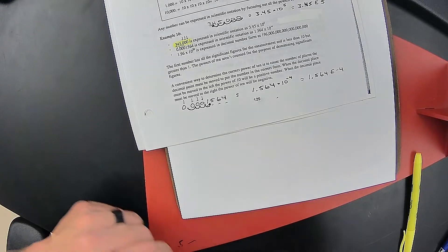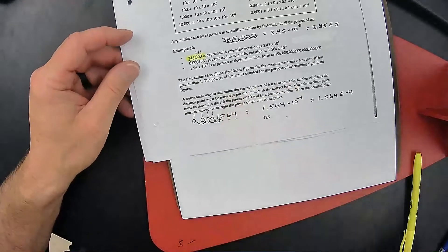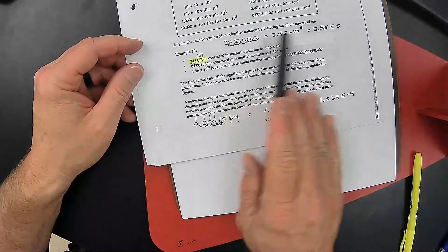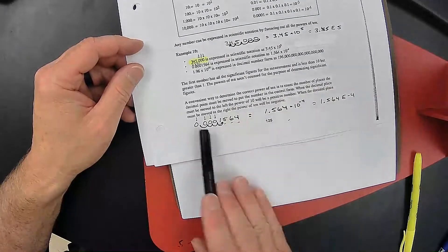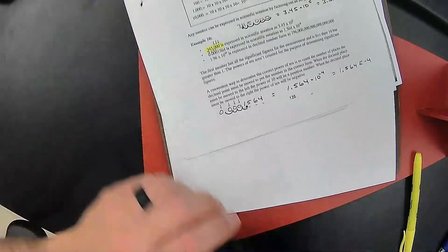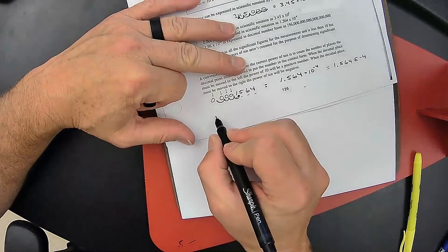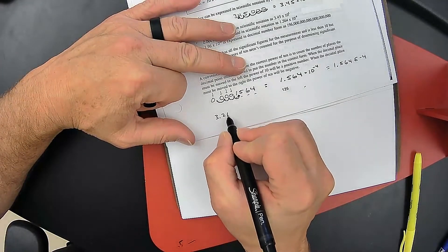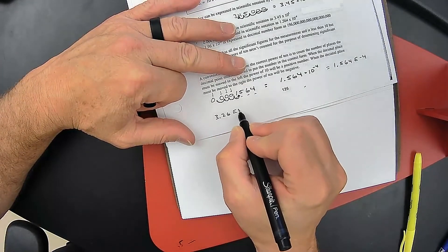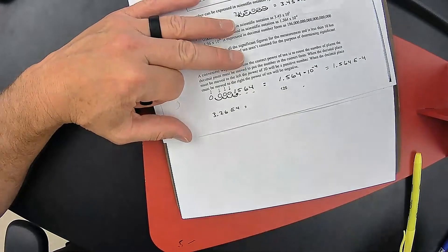So in dealing with scientific notation, there are times where you're putting it into scientific notation. There's also times where you're taking it out of scientific notation. Let's say that we have this example, 3.26 E to the fourth. Well, how would we do that?